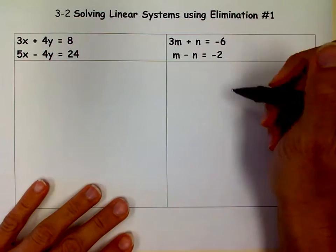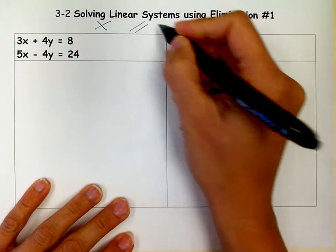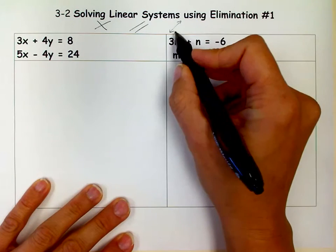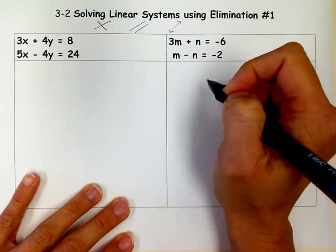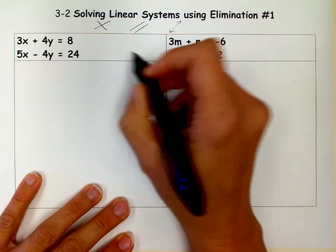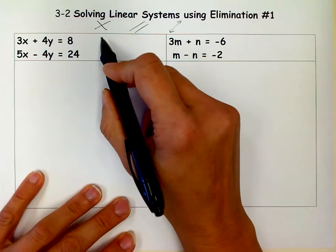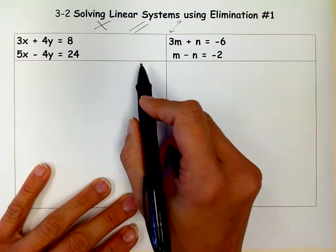So sometimes lines intersect at one point, sometimes they're parallel and they don't intersect at all, and sometimes it's the same line and we get an infinite amount of solutions. So one of those three things can happen. Most of the time you'll be finding that there's one solution. Just keep in mind the other two can happen.